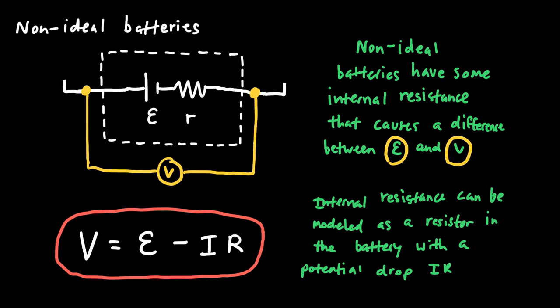If you want to know the actual voltage between the two terminals of the battery, you take the EMF epsilon — which represents the voltage the battery is designed to produce — minus the voltage drop due to the internal resistance, I times r. Epsilon is the designed voltage, I times R is the voltage drop due to internal resistance, and the difference is the actual measured voltage. It's not that there's a literal resistor inside, but we model the non-ideal battery as having a small resistor inside it.